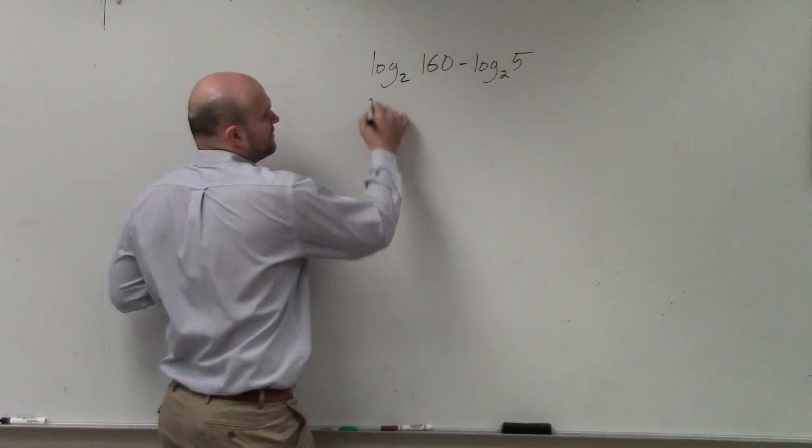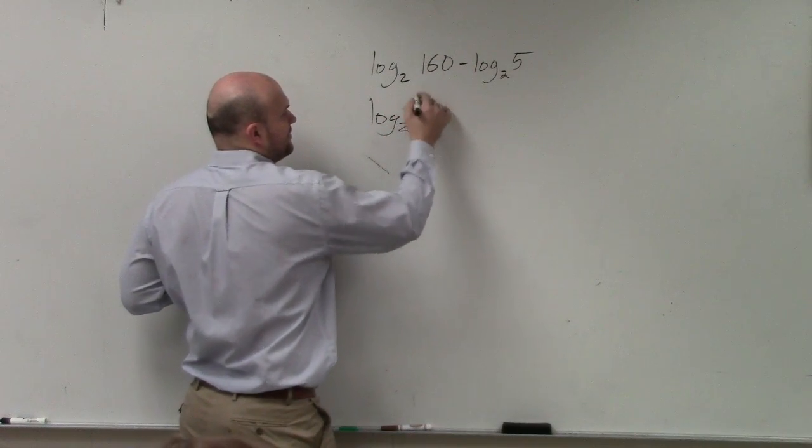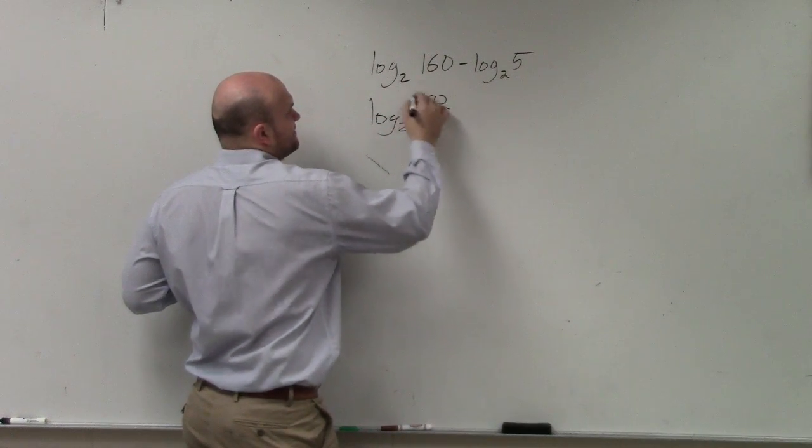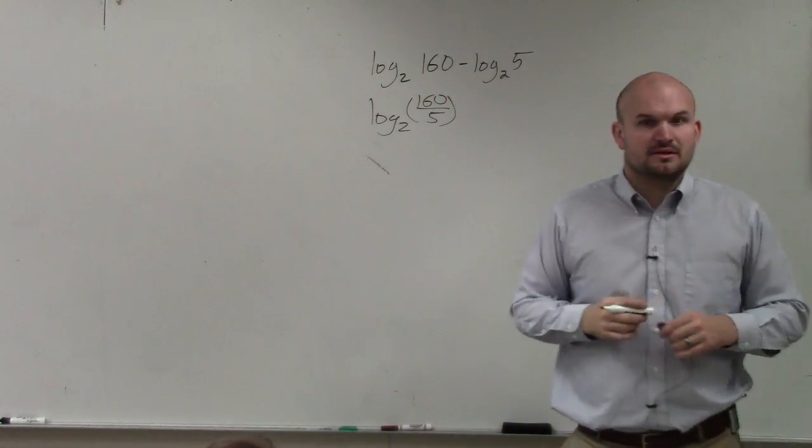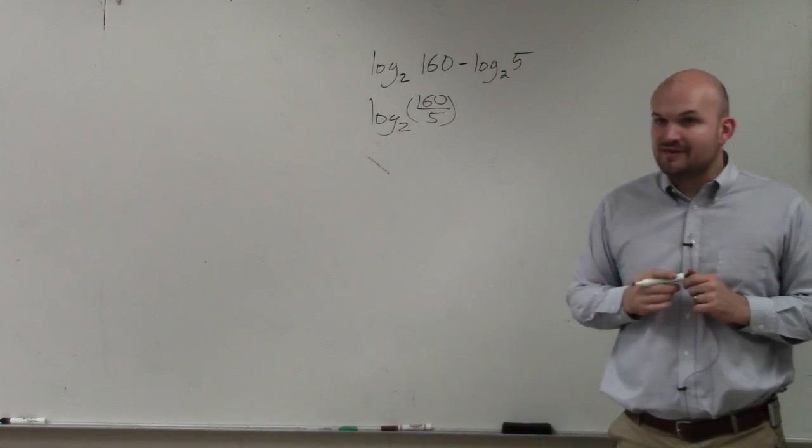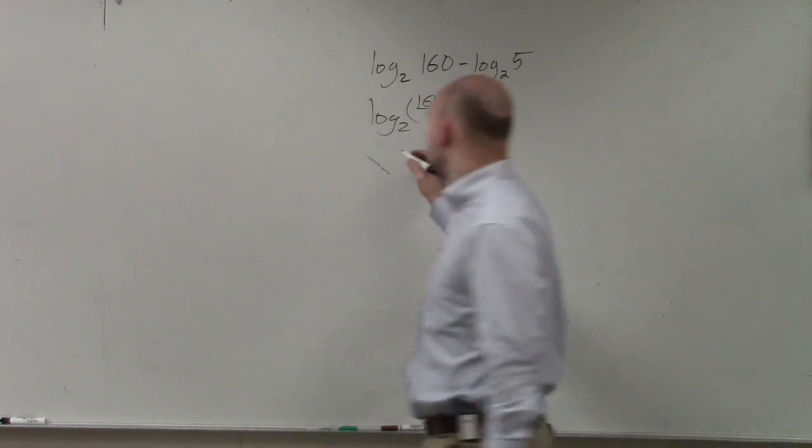However, if I apply the rules of exponents, I would have to do 160 divided by 5. Now, 160 divided by 5 is going to be 32.